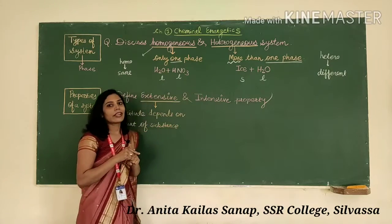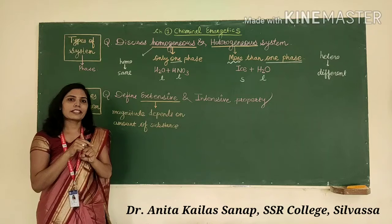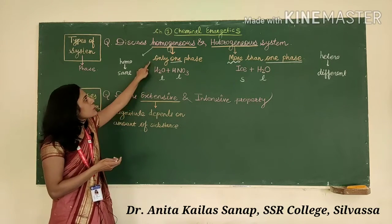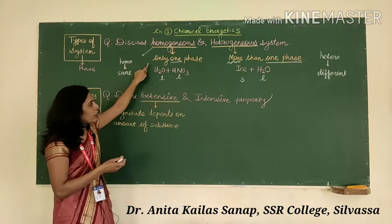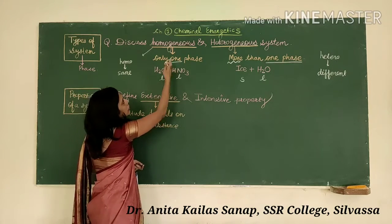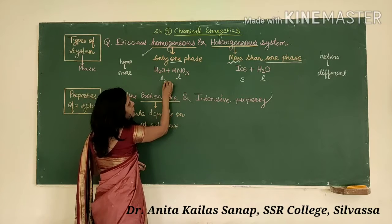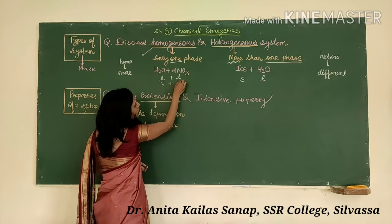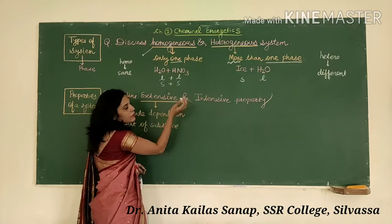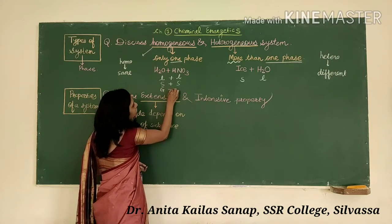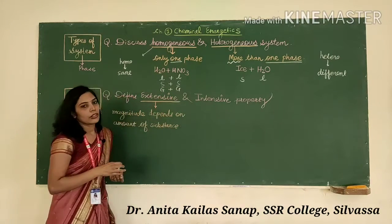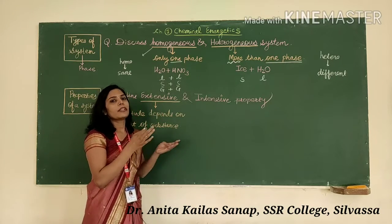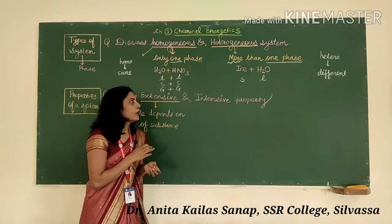In a system, whenever there is only one phase — whether solid-solid, liquid-liquid, or gas-gas — it is called a homogeneous system. In a homogeneous system, there may be liquid-liquid, solid-solid, or gas-gas. While in a heterogeneous system, there will be a combination of different phases.